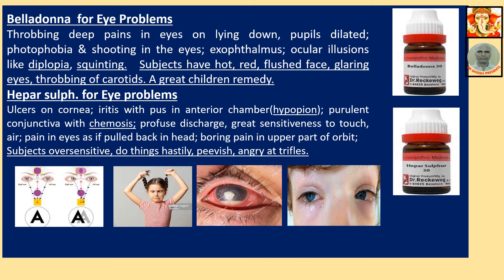Belladonna for eye problems: throbbing deep pain in eyes on lying down, pupils dilated, photophobia, shooting in the eyes, exophthalmos, ocular illusion like diplopia (dual vision), squinting. Subject has red, hot, flushed face, glaring eyes, and throbbing of carotids. This is a great children's remedy. These general symptoms help individualize the case to confirm this is a Belladonna patient.